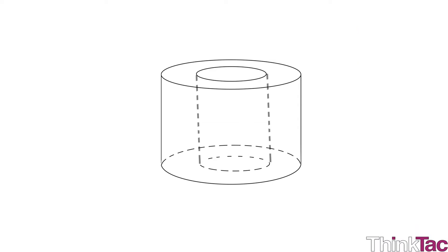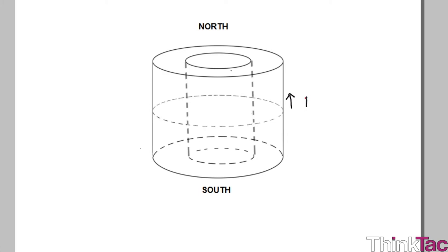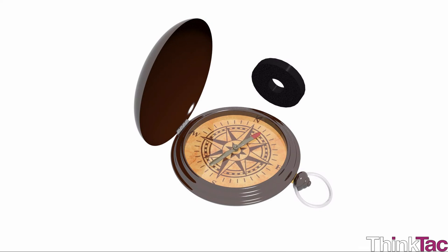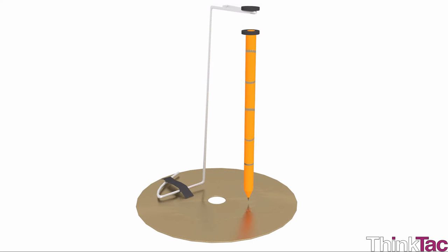For this model, the ring magnet has four faces: upper, lower, inner, and outer. The curved inner and outer surfaces aren't poles — they have the same polarity as the surface they are closer to, so half the curved surface is north and half is south. Using a compass, can you figure out which flat surface is the north pole and which is the south?